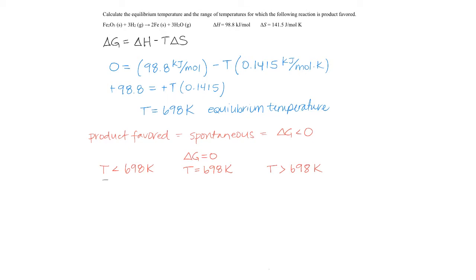Let's pick a temperature less than 698 Kelvin and see what happens to G. Perhaps the easiest temperature to pick would be T equals 0 Kelvin. If T is 0, then the entropy term disappears, and we end up with delta G being positive. When you have a delta G greater than 0, that's a non-spontaneous reaction. Non-spontaneous also means reactant favored.